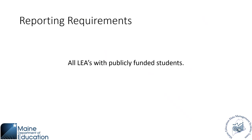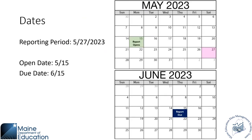All LEAs with publicly funded students are required to complete this report for assessment purposes. This report is going to open on 5/15. You may see it populating if you log in. If it's not, wait until 5/15 and you'll be able to see that data starting to come into the report. It is looking at data for students on 5/27. Note that 5/27 is on a Saturday — similar to April 1 and October 1, you'll want to make sure that you're checking those enrollments for that 5/27 Saturday date.